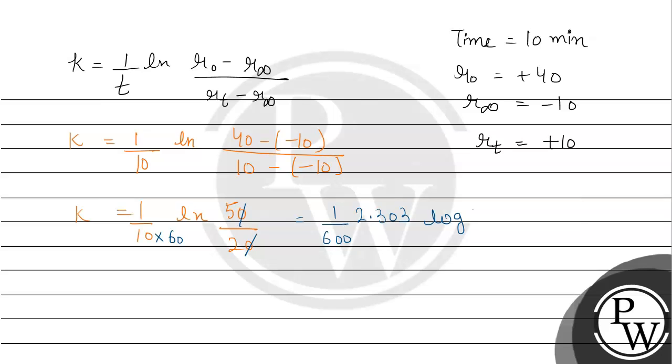If we cancel the zeros, it will be log of 5 minus log of 2, because log of a divided by b is always equal to log of a minus log of b.